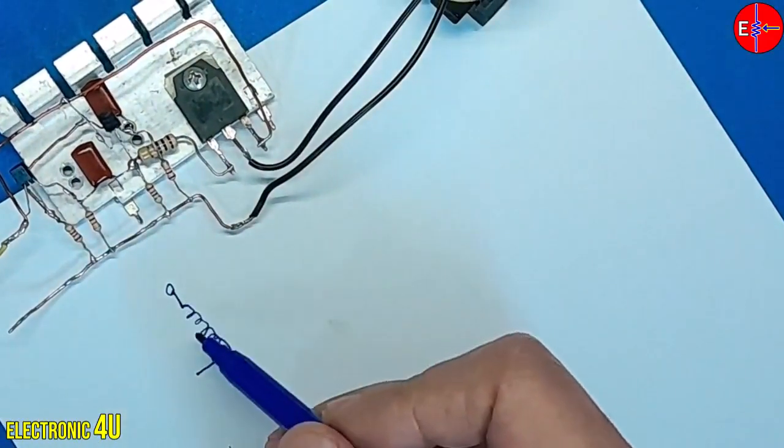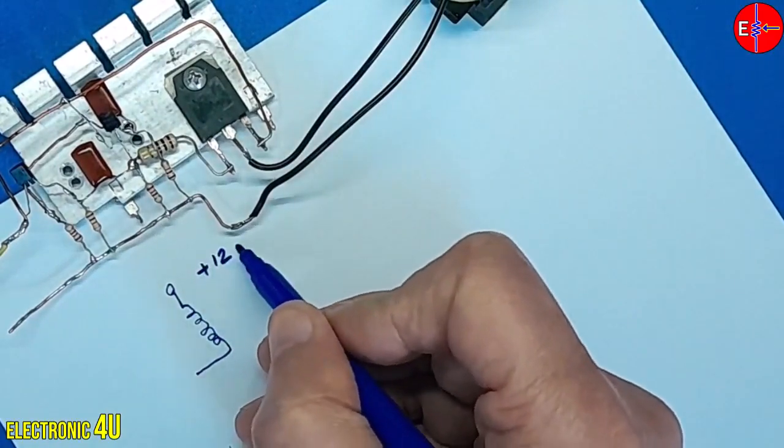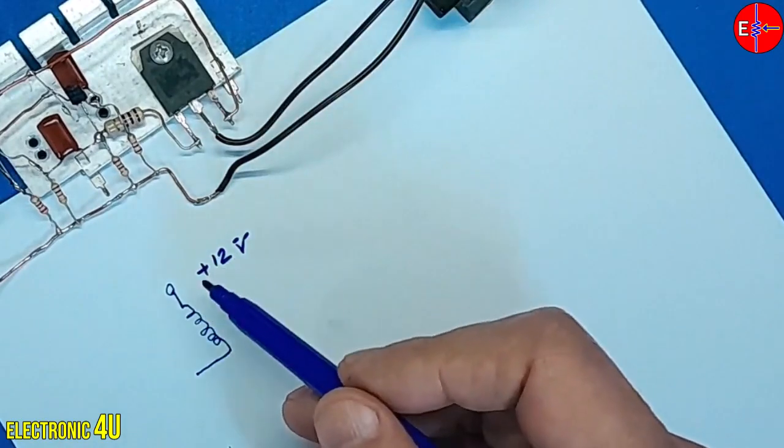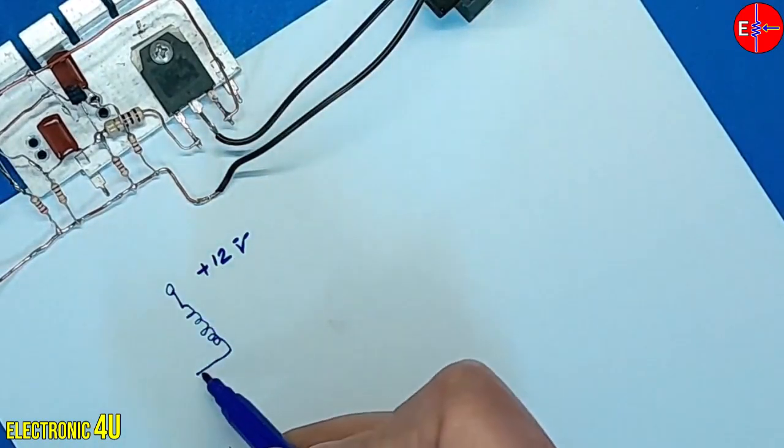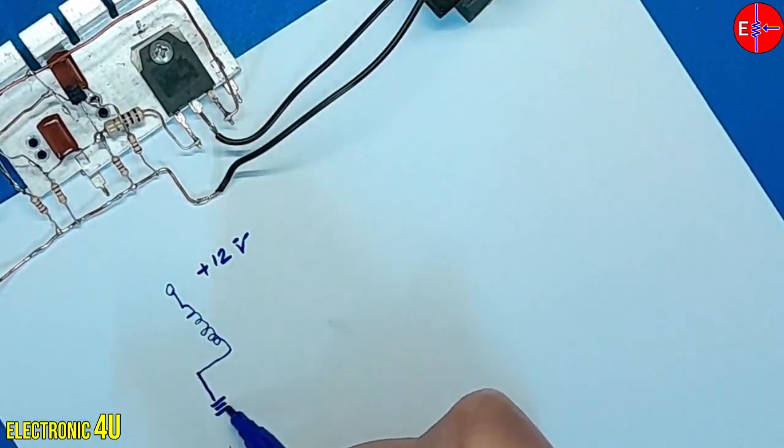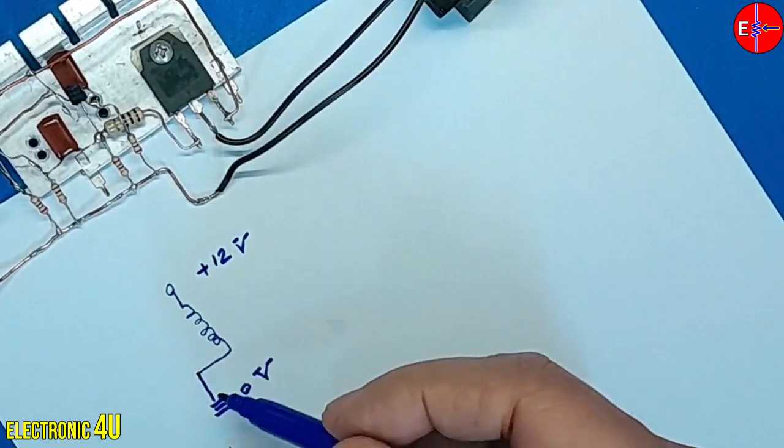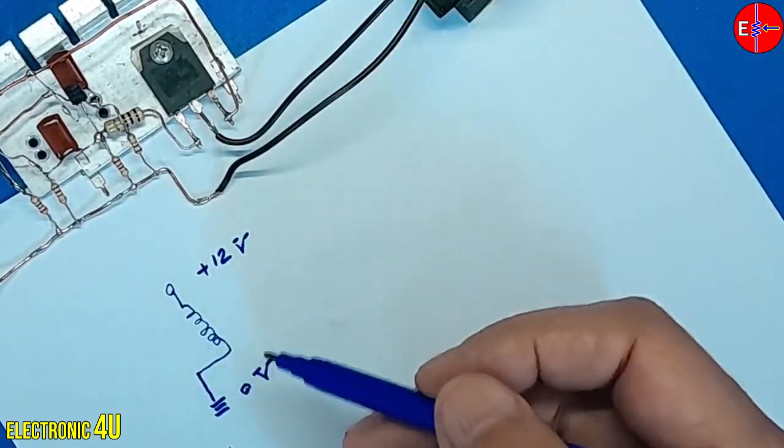When a direct current voltage, such as 12 volts, is applied to one end of the coil while the other end is connected to 0 volts, a short circuit is created, potentially causing harm to the coil or the voltage source.